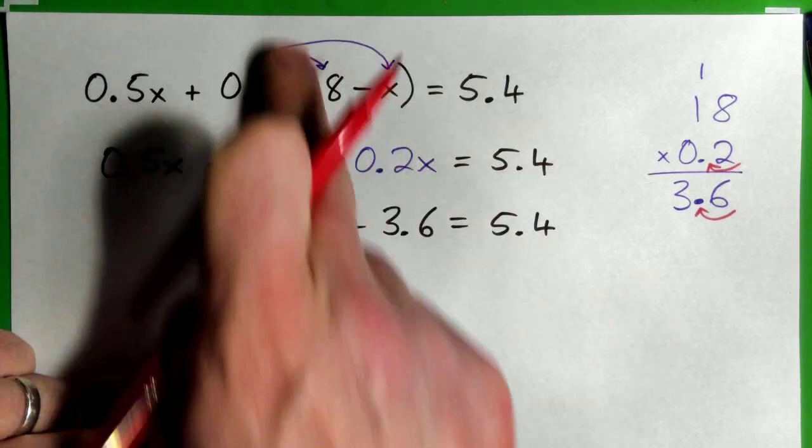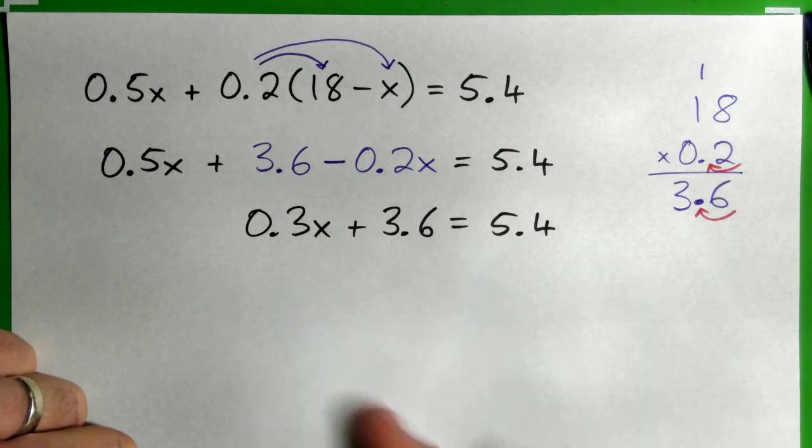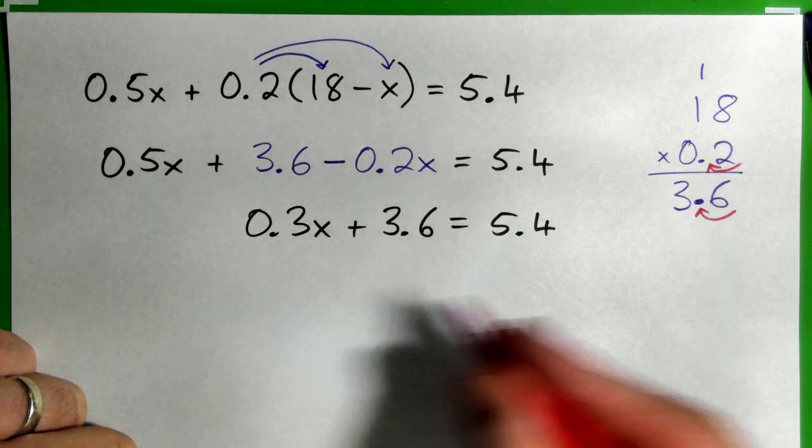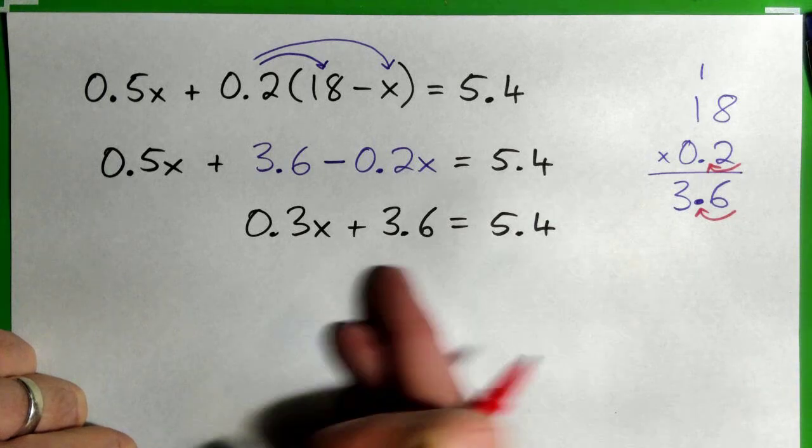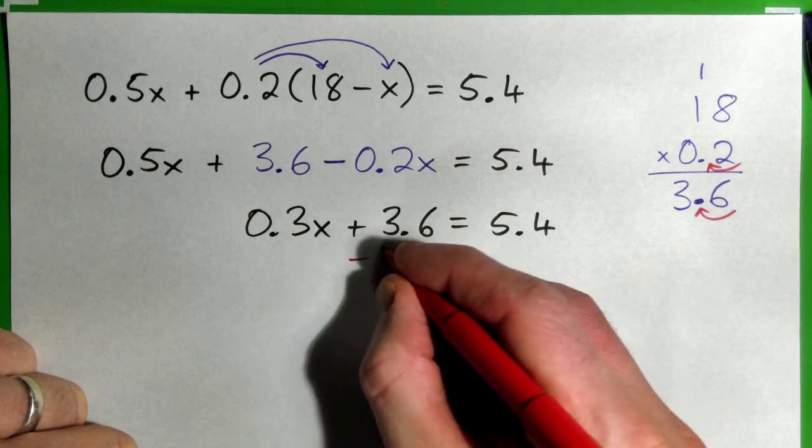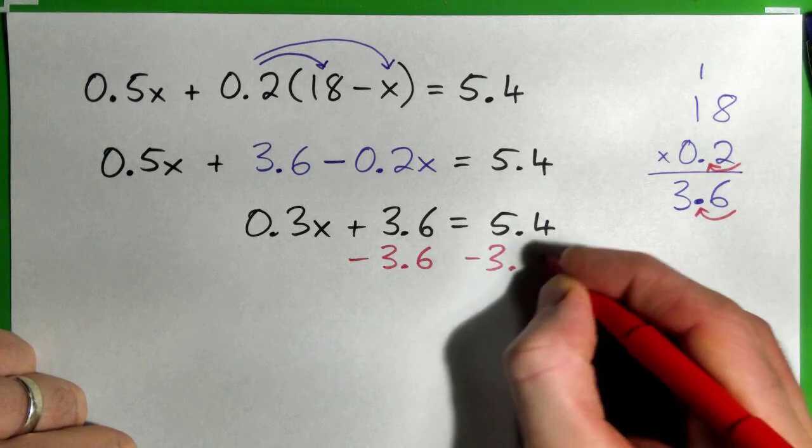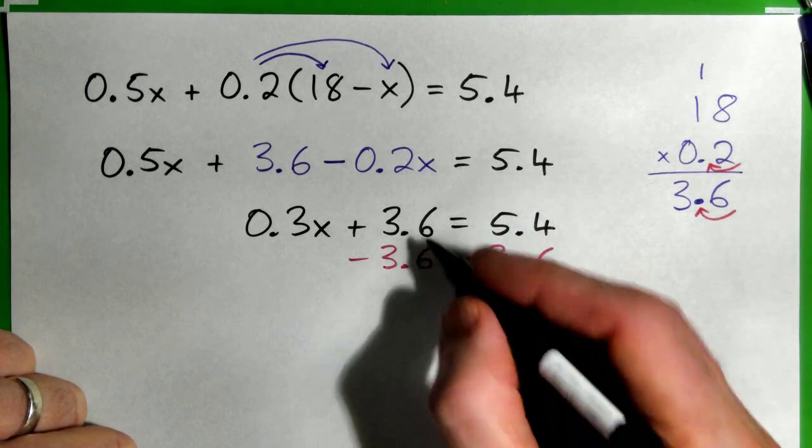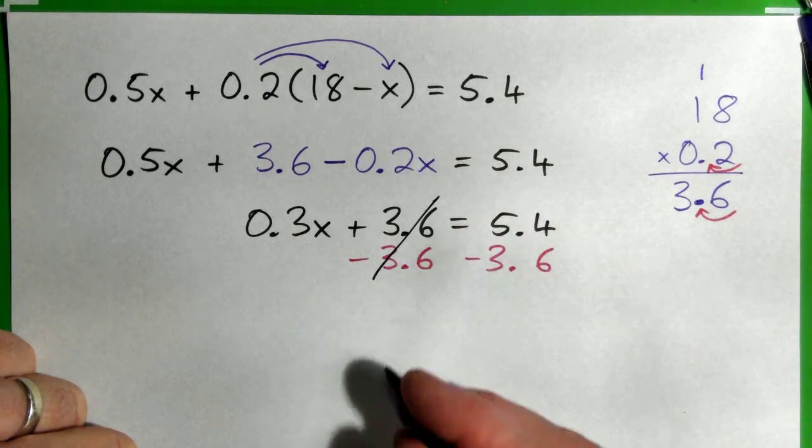It's time to start solving the equation. Now this is the point where we can add and subtract to both sides and divide both sides. So we can subtract 3.6 from both sides. See that? All right. 3.6 minus 3.6, that's 0. So we've got 0.3x on the left.